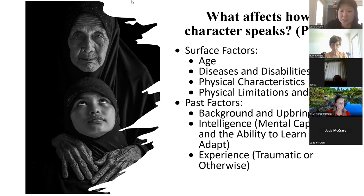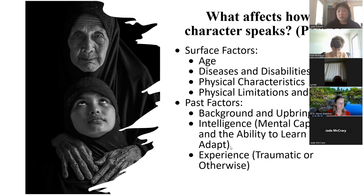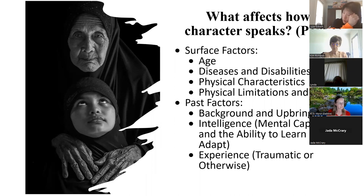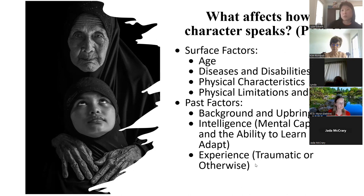Past factors — what background do they have? Their upbringing, intelligence, mental capacity and ability to learn and adapt. There are people who write main characters with disabilities. When I was writing somebody with Down syndrome, I looked up some YouTube videos and listened to a girl speak who has Down syndrome so I could get used to the pattern and the way it sounds, so that I could translate that accurately into my story. Experience — that goes back to the battle-hardened army ranger versus the little girl looking at ponies. Your experience, what you've seen and felt, will change your characters in a lot of ways.